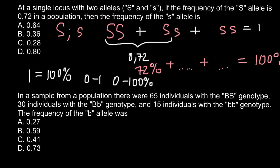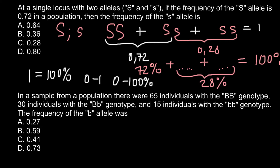So we can tell that the frequency of the recessive allele would be equal to 0.28, or 28%. This is the frequency of the small s allele, present in heterozygous form and in homozygous recessive. So the correct answer would be C: 0.28. Since 0.72 plus 0.28 equals 1, that is how we find frequencies of two alleles present in three genotypes.